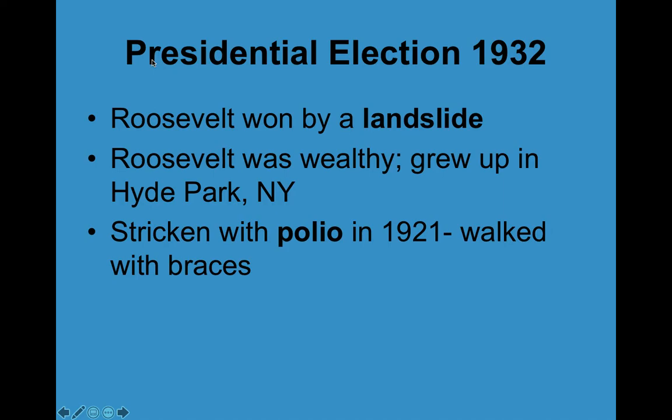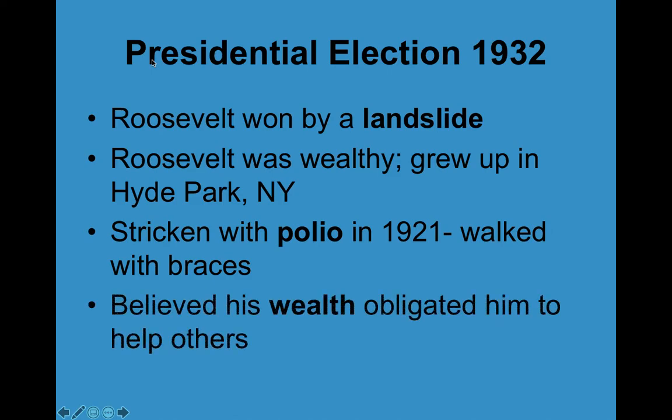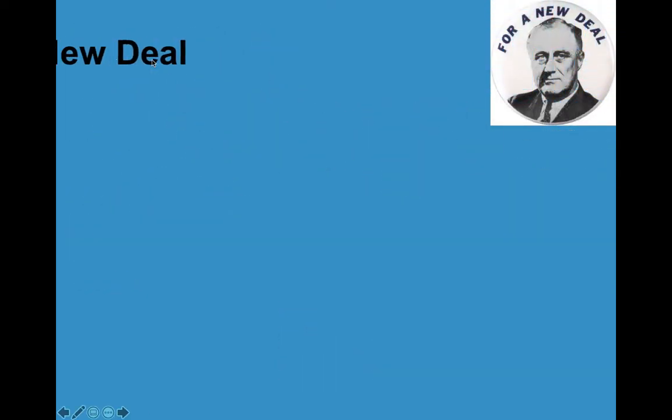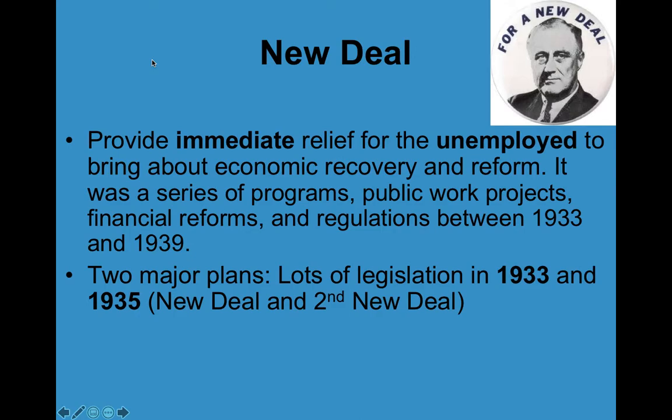He stood for speeches but spent a lot of time in a wheelchair. Roosevelt believed his wealth obligated him to help others — he wanted to use his standing in life to help others. Here you can see some pictures of him. Now, what was the New Deal? The New Deal was aimed at providing immediate relief for people who were unemployed, and would hopefully bring about economic recovery and reform.